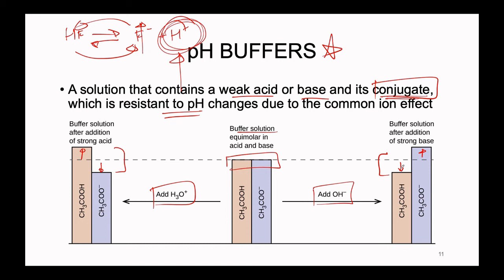Buffered solutions are incredibly important — they keep us alive. If you've ever wondered why your stomach acid doesn't eat through your entire body, or why pH differences across your body don't cause problems, it is because of buffers. The solutions inside our body contain weak acids and bases along with their conjugate ions, which keep pH levels stable and prevent us from neutralizing ourselves as we exist.